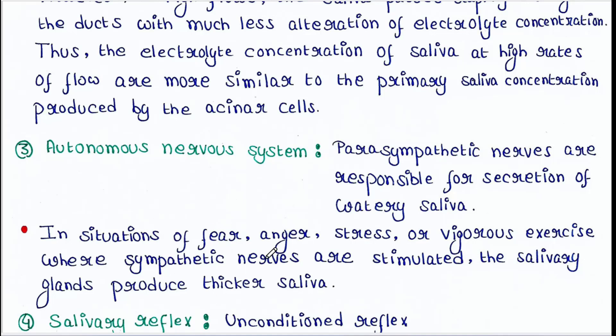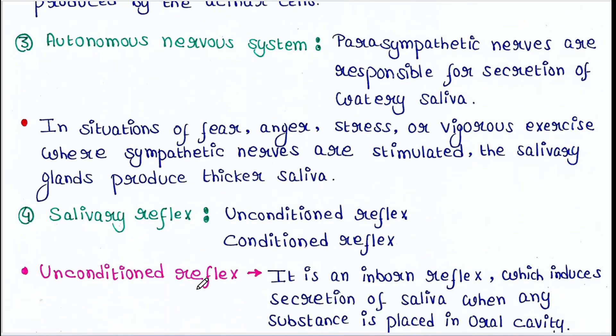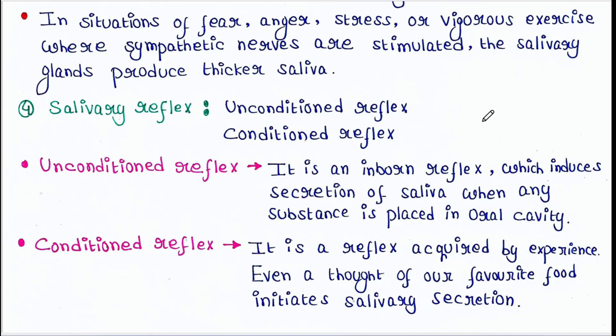In situations of fear, anger, stress, or vigorous exercise, sympathetic nerves are stimulated and the salivary glands produce thicker saliva. Sympathetic nerves work when we are in danger or a stressed condition, causing the salivary glands to produce thicker saliva.